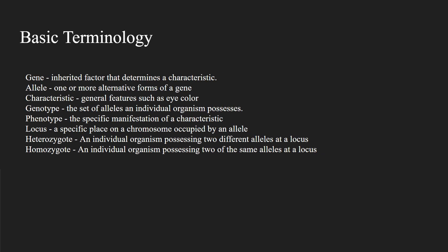A gene is an inherited factor that determines a characteristic. An allele is one or more alternative forms of a gene. A characteristic is a general feature, such as eye color. And a genotype is the set of alleles an individual organism possesses. A phenotype is the specific manifestation of a characteristic.